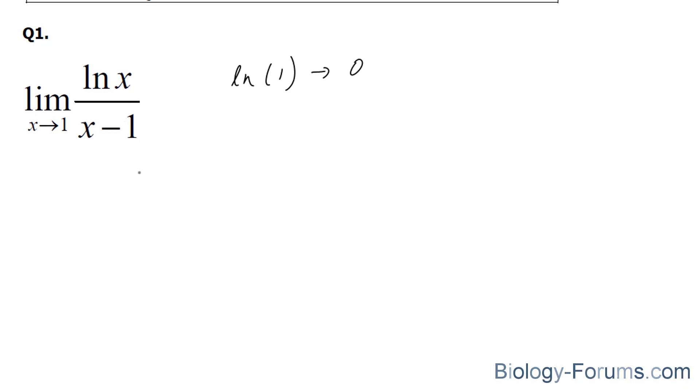And similarly, if we evaluate this function at 1, we end up with 0. So we end up with 0 over 0. Hence, we can find the derivative of this function, and find the derivative of this function, and then evaluate the limit.